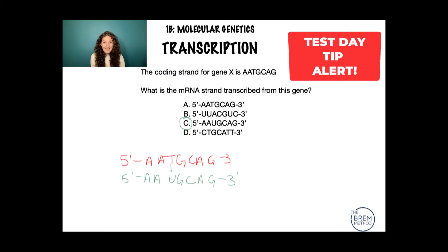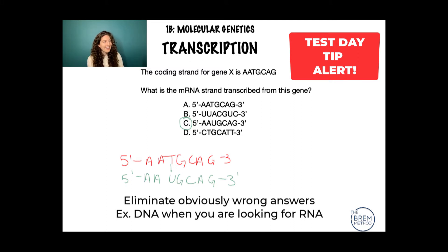Now, on test day, the first thing you want to do is if you're looking for mRNA, you want to eliminate anything that's not RNA, which is DNA. And as we can tell, DNA has T's instead of U's. So we could eliminate right away A and D, and then we're just choosing between B and C. So on test day, it's always a good idea to eliminate obviously wrong answers to make sure that you're making the correct decision when you finish your logic.